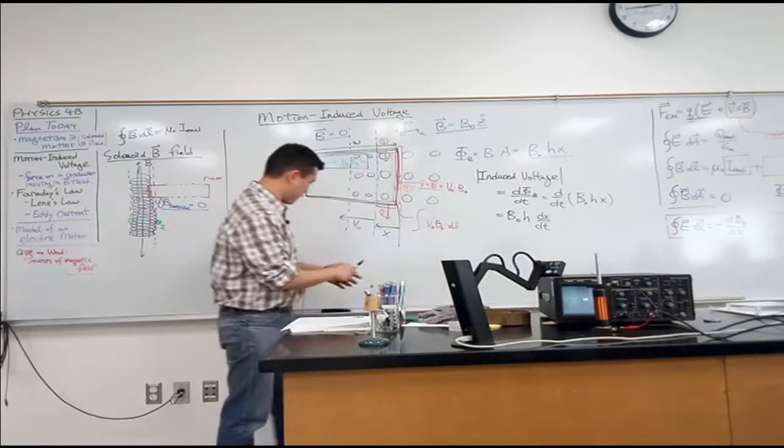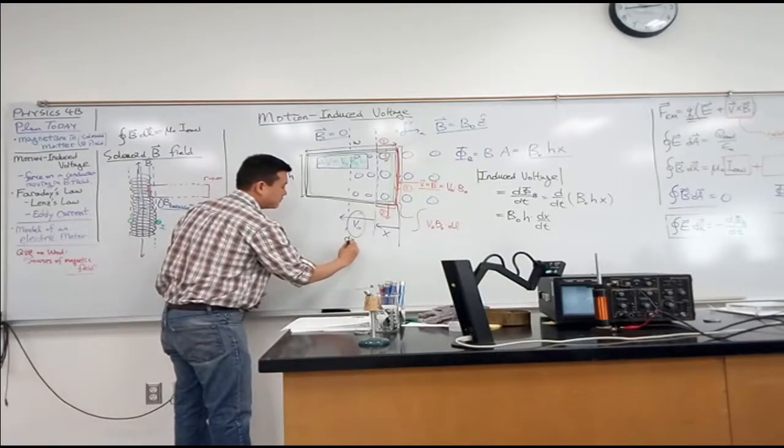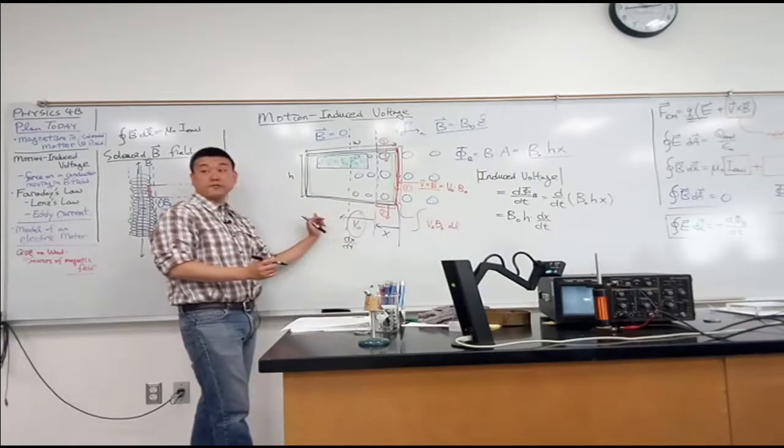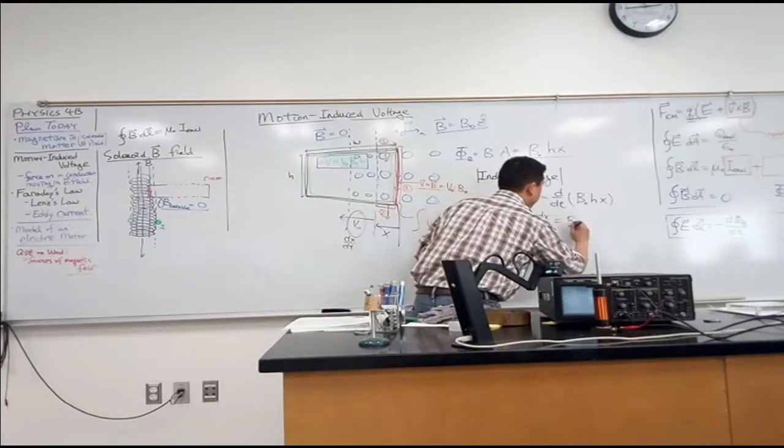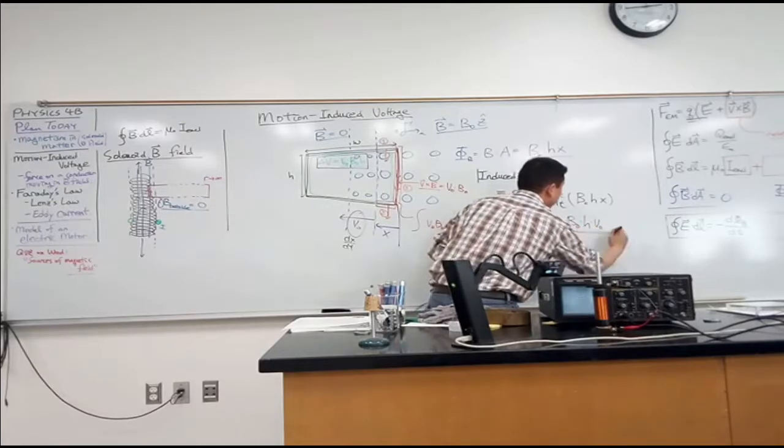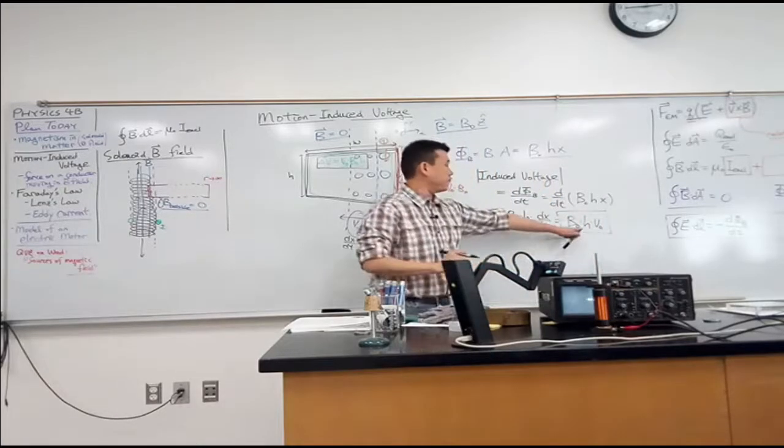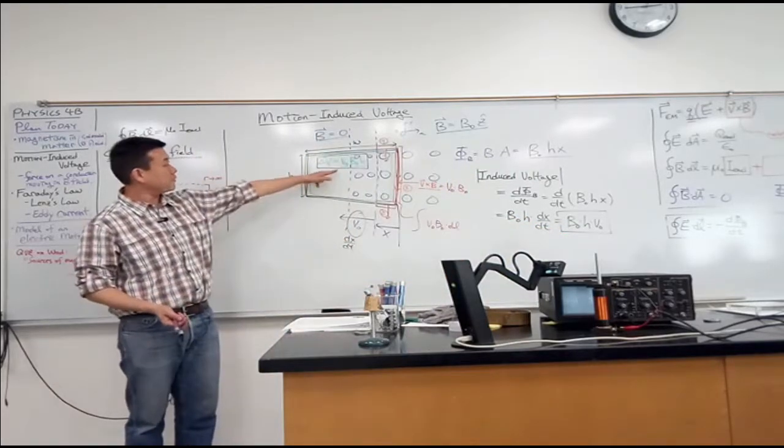Well, I think I have that. This is my dx/dt, right? That's how fast this boundary is moving. So all of that, I get B_naught times H times V_naught. So this is the magnitude of induced voltage that Faraday's law gives you compared to this.